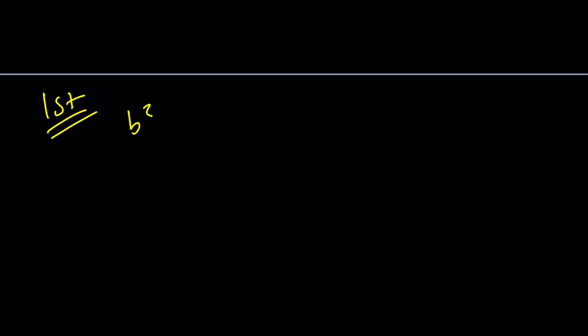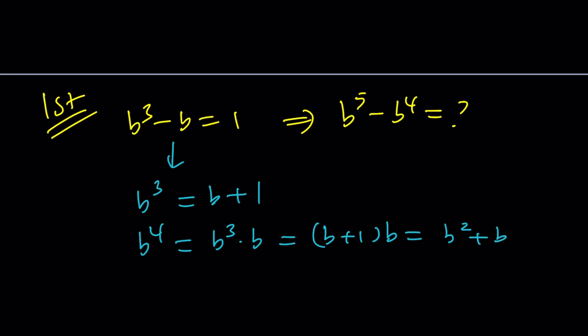So we're going to jump to first. I have b cubed minus b equals 1, and I'm supposed to evaluate b to the fifth minus b to the fourth numerically. Third method is incomplete because that's time-consuming. So here's what I'm going to do. I'm going to isolate b cubed. From here, I'm going to evaluate two things. b to the fourth, which is b cubed times b, which is b plus 1 times b, which is b squared plus b. Awesome. I got b to the fourth as a quadratic.